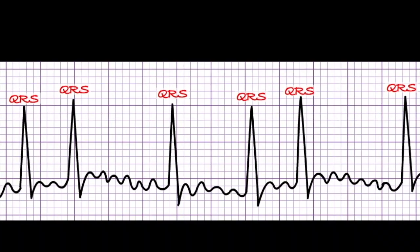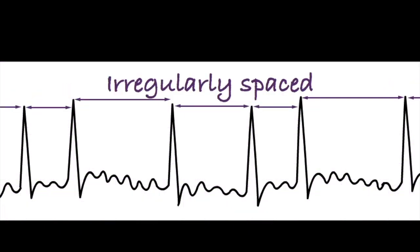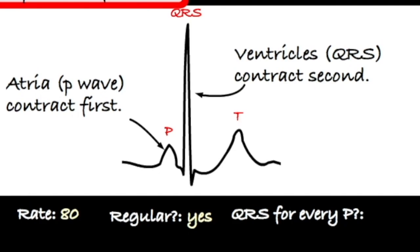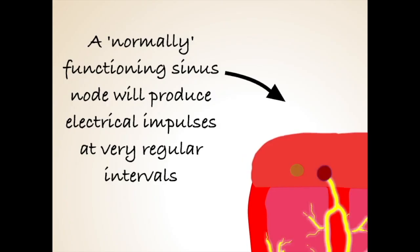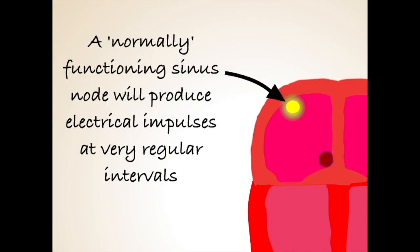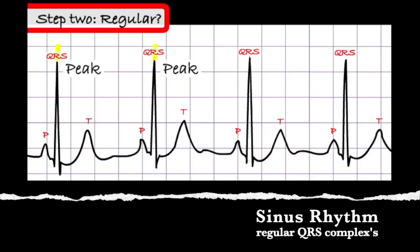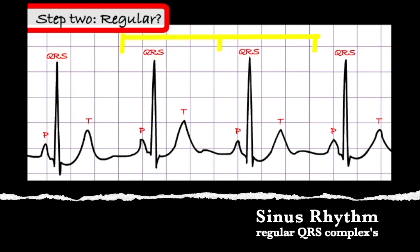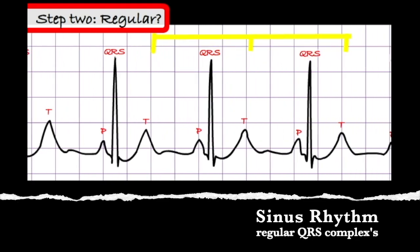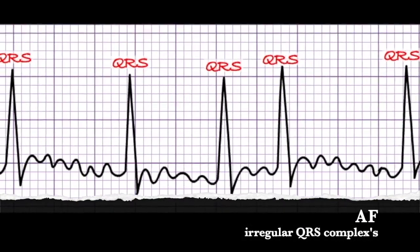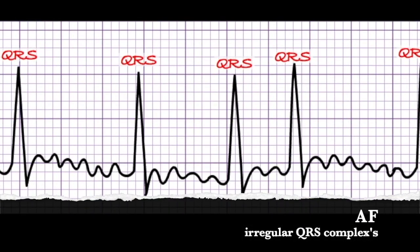This can be identified on an ECG by analysing the spacing of the QRS complexes. A QRS complex represents a contraction of the ventricles. In a sinus rhythm, the regular conduction of impulses from the sinus node results in regular contractions of the ventricles, so the QRS complexes appear at regularly spaced intervals across a rhythm strip. In AF, the complexes lack this regular spacing.